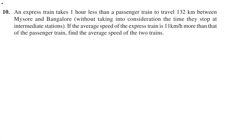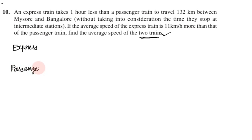An express train takes 1 hour less than a passenger train to travel 132 km between Mysore and Bangalore, without taking into consideration the time they stop at intermediate stations. The average speed of the express train is 11 km per hour more than that of the passenger train. We have two trains: express and passenger, both traveling 132 km. Express train takes time T1, passenger train takes time T2.